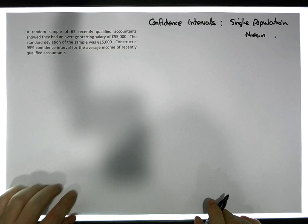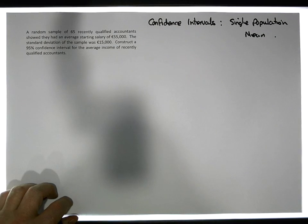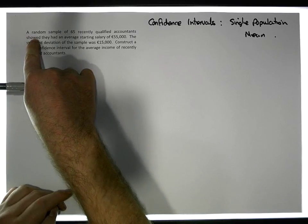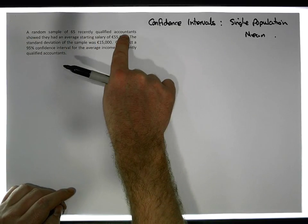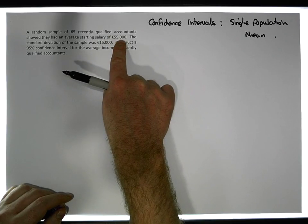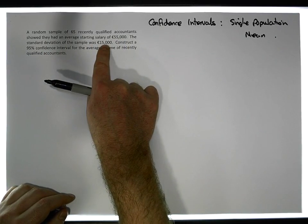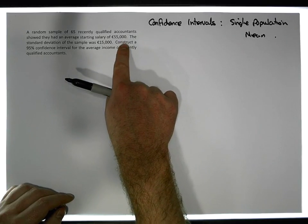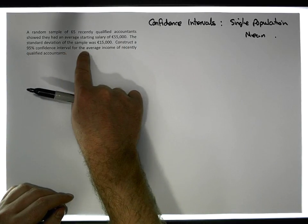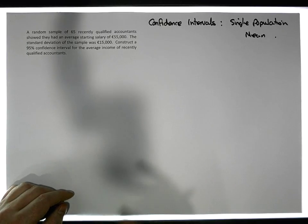In this particular video I have a specific scenario to concentrate on. A random sample of 65 recently qualified accountants showed they had an average starting salary of €55,000. The standard deviation of the sample was €15,000, and what we're being asked to do is construct a 95% confidence interval for the average income of recently qualified accountants.